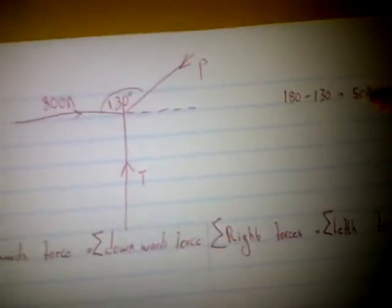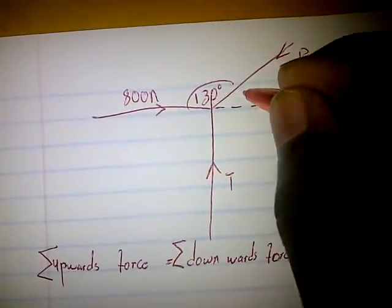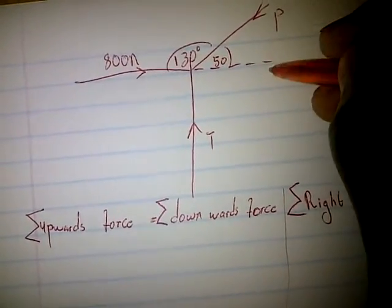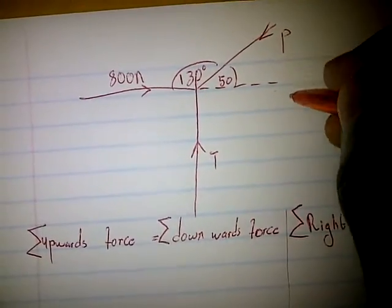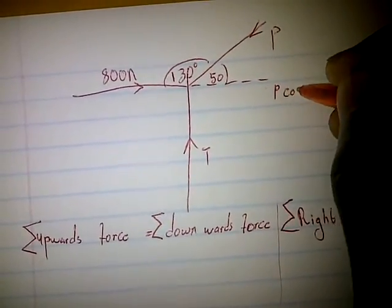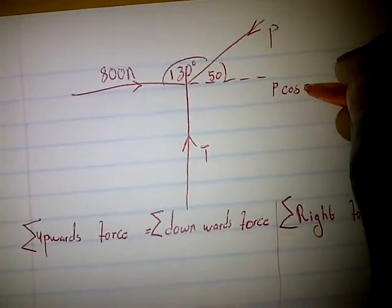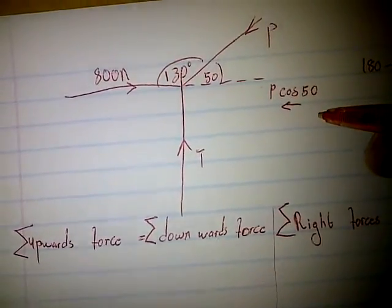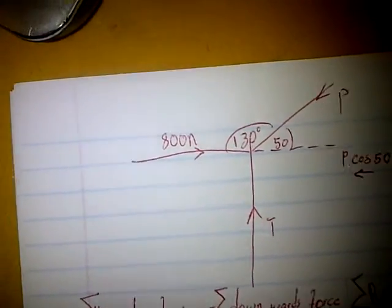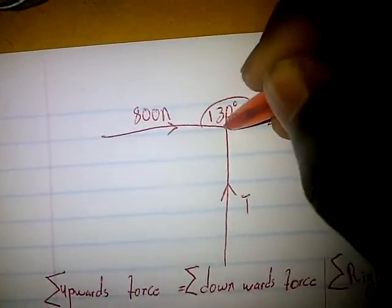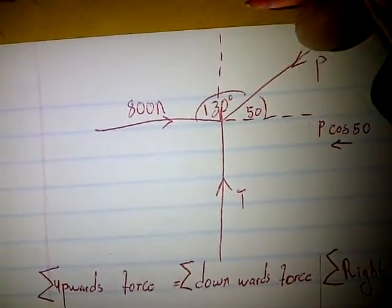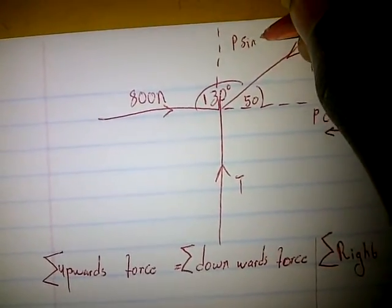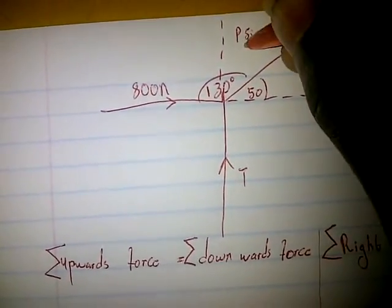That gives us 50 degrees, so we are having a 50-degree angle here. To resolve P into a horizontal component it's going to be P cos 50, going in this direction to the left-hand side. To resolve P into a vertical component it's P sin 50.